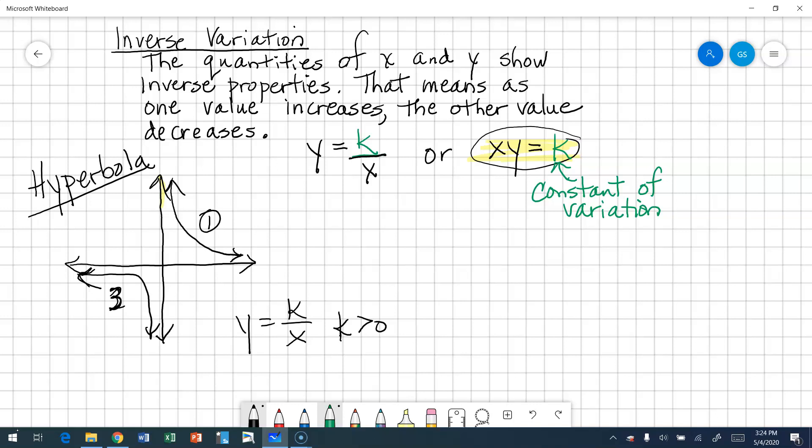In quadrant one, both x and y are positive. In quadrant three, both x and y are negative. Conversely, if I have an inverse variation, where k is negative, k is less than zero, the arms of my hyperbola are going to be in the second quadrant or the fourth quadrant, because in that quadrant, my x and my y are opposite signs.